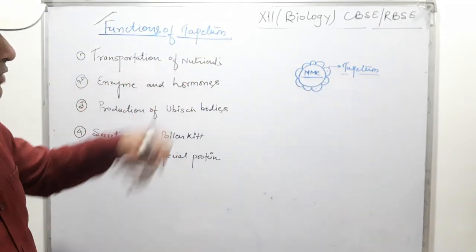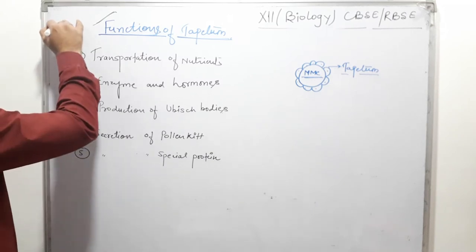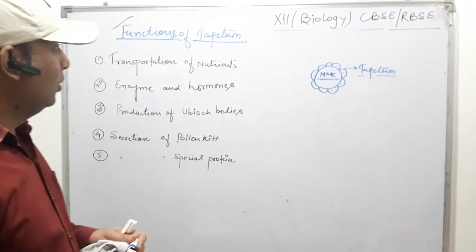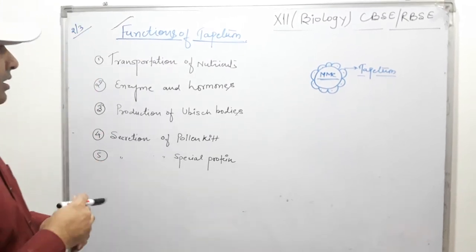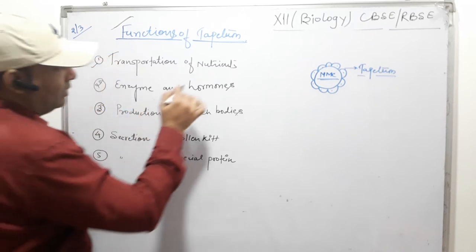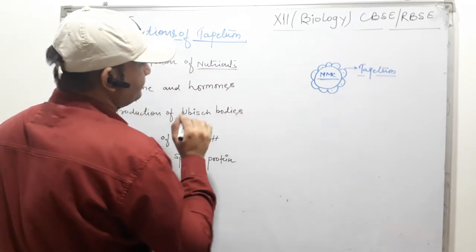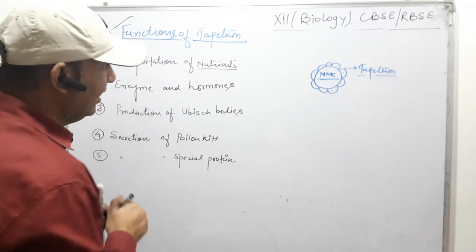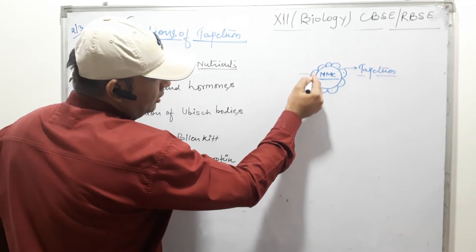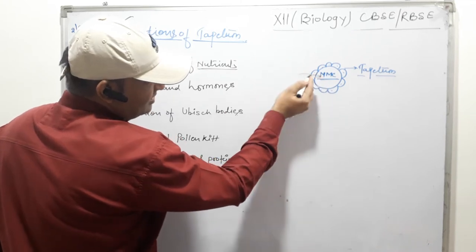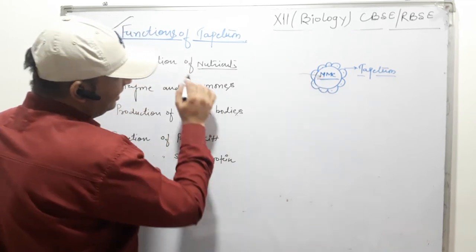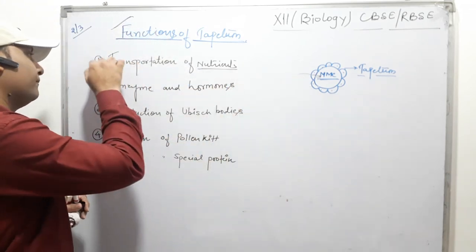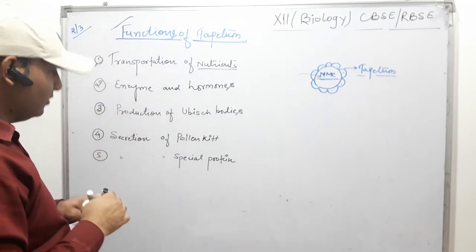Now we discuss the functions of tapetum — an important question worth approximately two to three marks for both CBSE and RBSC students. The first function is transportation of nutrients. The nutrients which are essential to the developing microspore mother cell (MMC) are transported from the middle layer to the microspore mother cell via the tapetum. The tapetum receives nutrients from the middle layer and transfers them to the MMC.